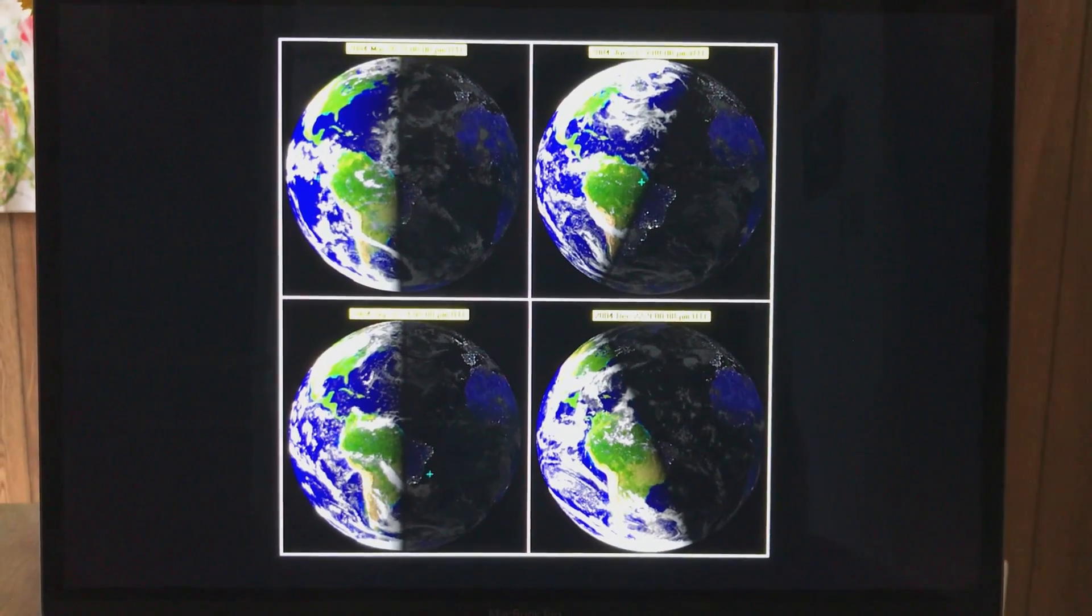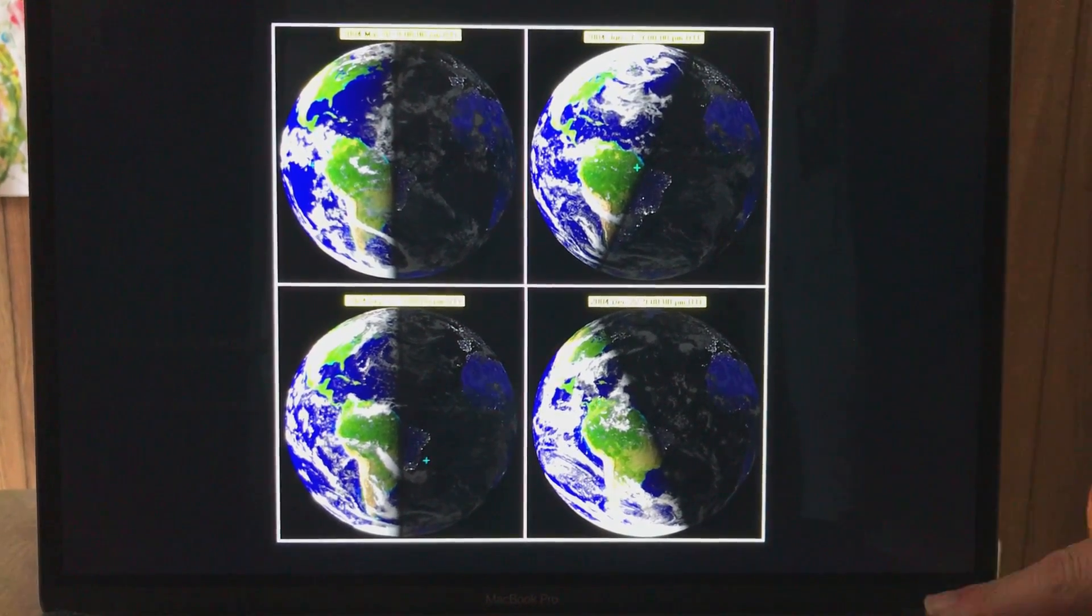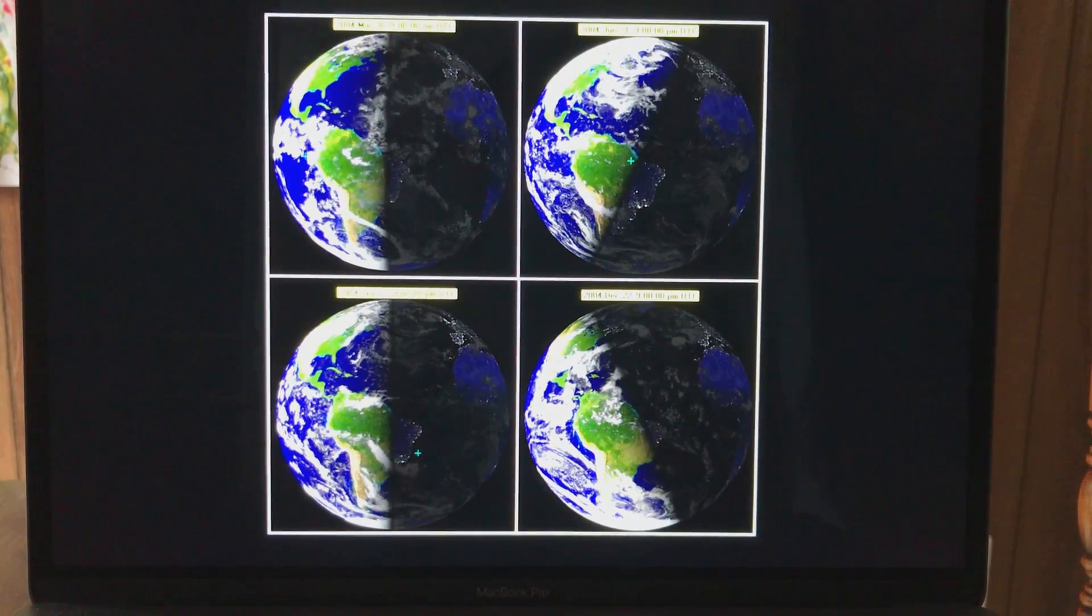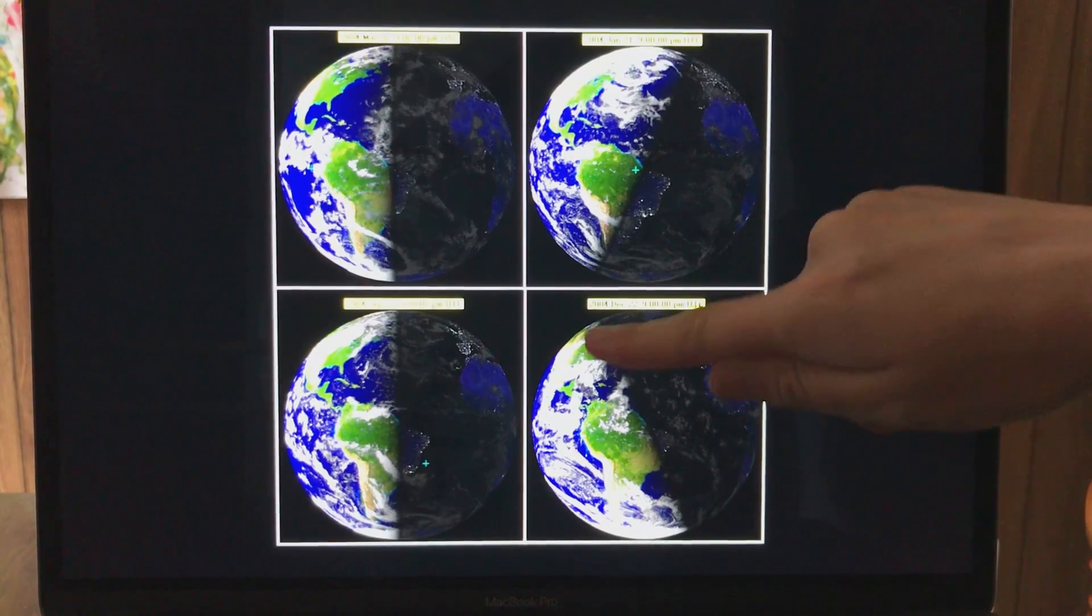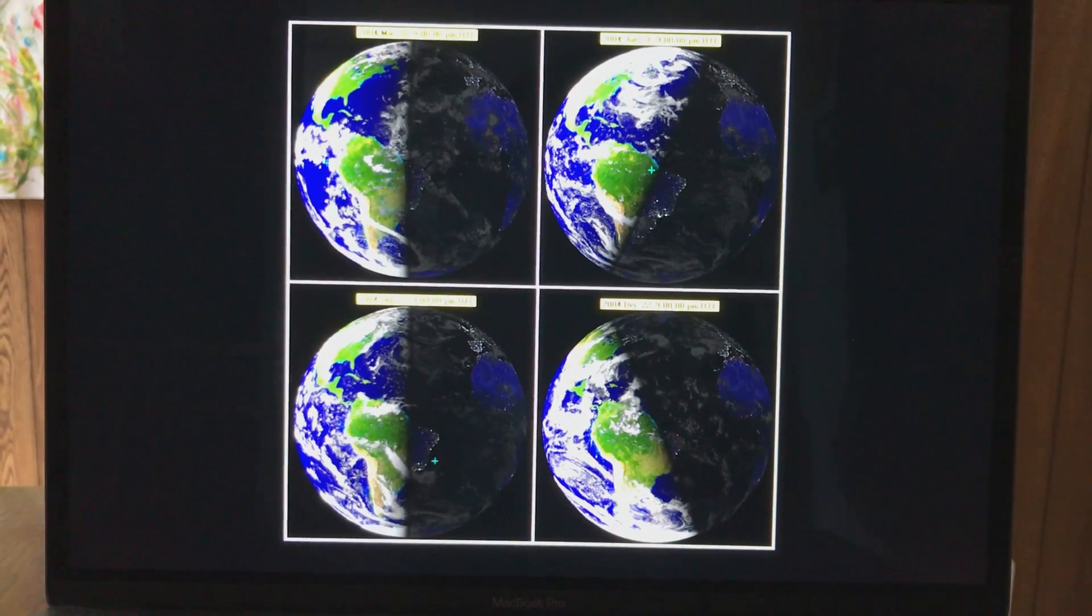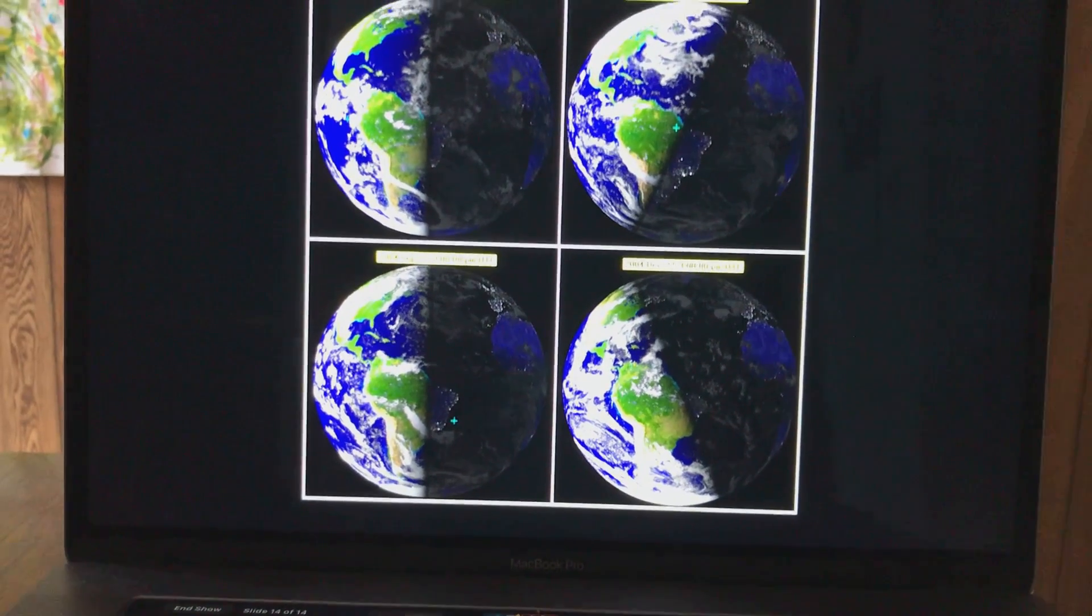Our seasons are caused by Earth's tilt. It's tilted 23.5 degrees on its axis. So in the Northern Hemisphere, when we get more sunlight in the summertime, it's the beginning of summer. As you can see in this image, the slant of the sunlight is very different on the Earth in different seasons. On our equinoxes, there's equal amounts of day and night in both hemispheres.